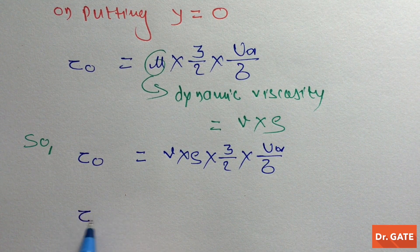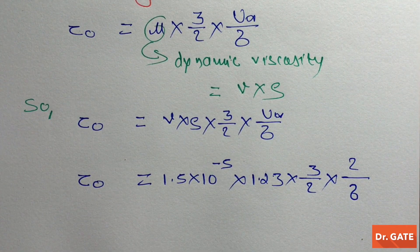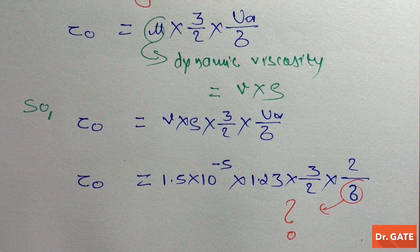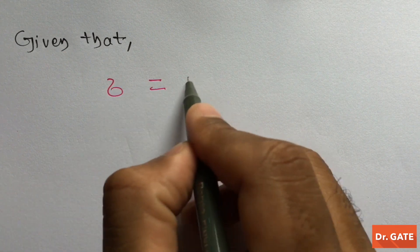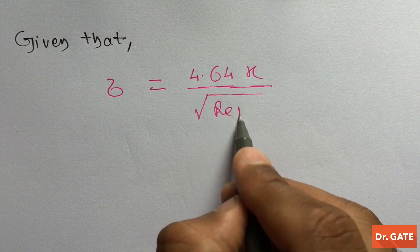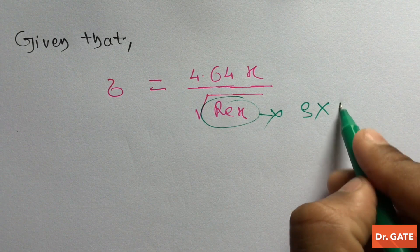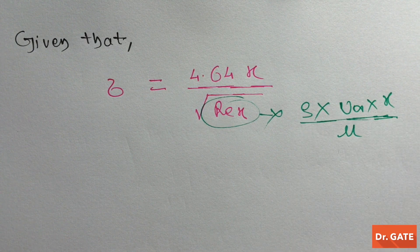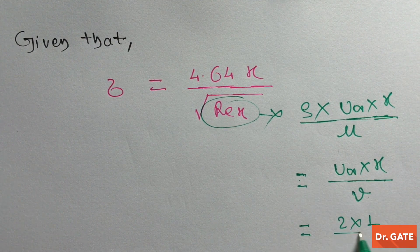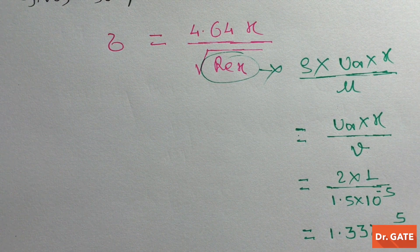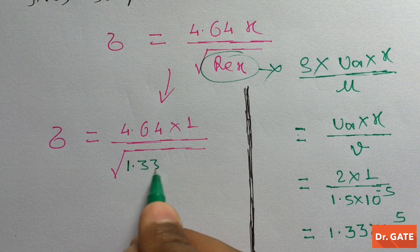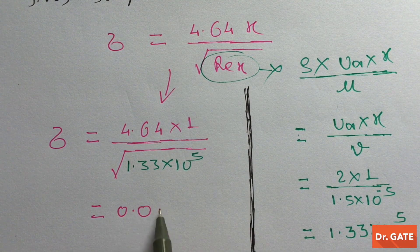On putting the values we get τ₀ equal to the expression shown. In this equation we only have to find the value of δ — let this be equation 2. It is given that δ = 4.64x / √(Re_x), where Re_x is the Reynolds number at distance x from the leading edge. On putting the values, the Reynolds number at x = 1 m is 1.33 × 10⁵.